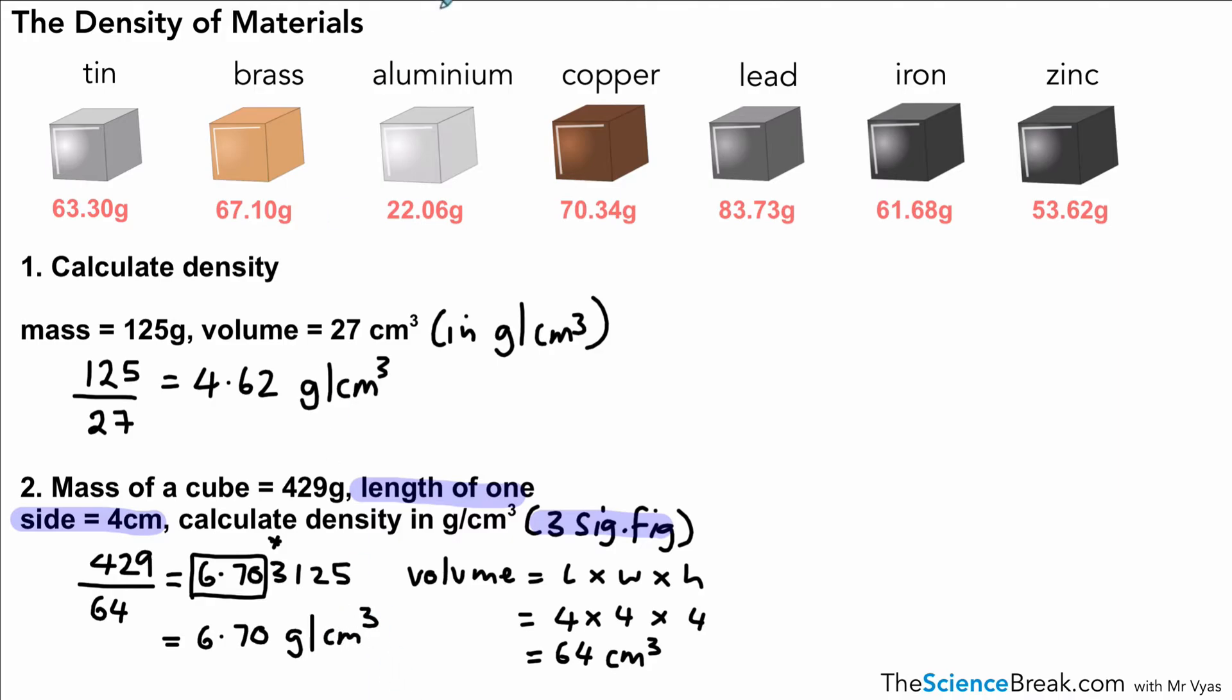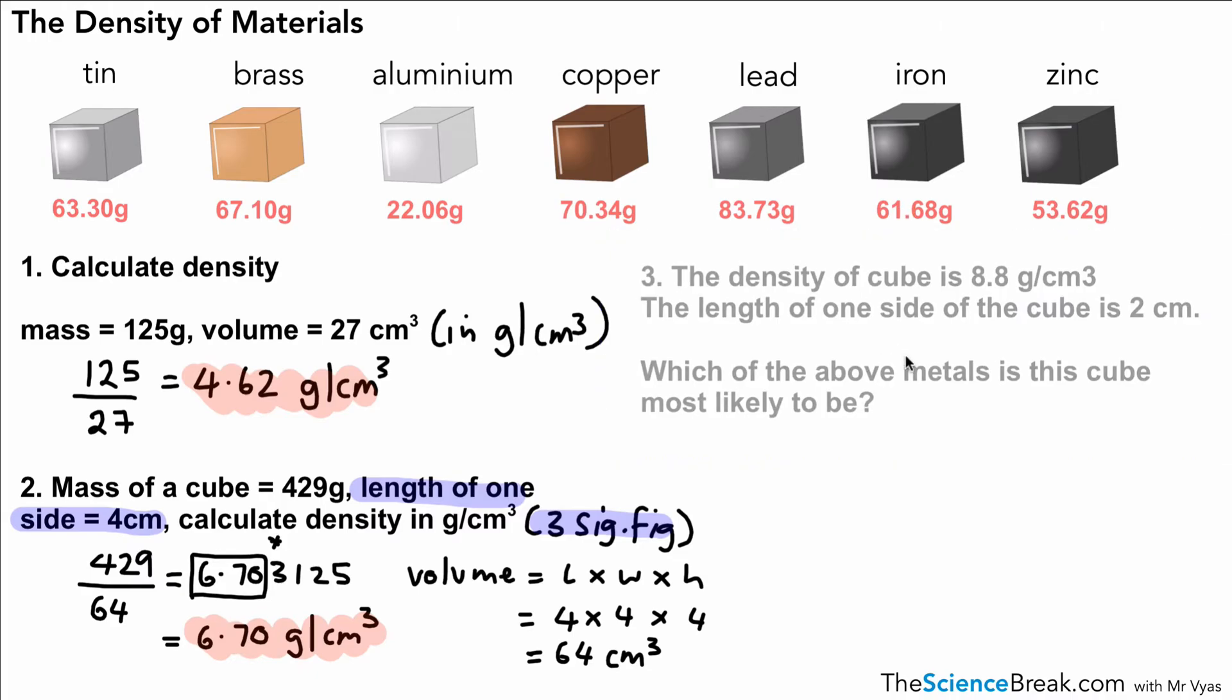We've got one more question to do. This one is again slightly trickier, probably a middle level of difficulty in terms of the whole physics GCSE. The density of a cube is 8.8 grams per centimeters cubed. The length of one side of the cube is 2 centimeters. Which of the above metals is this cube most likely to be? The only way we can tell or identify each of those is by the mass, and we have all the masses for the different cubes.